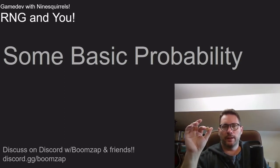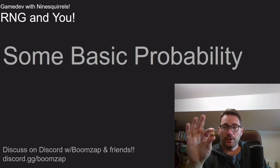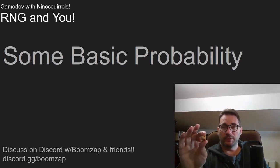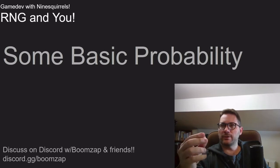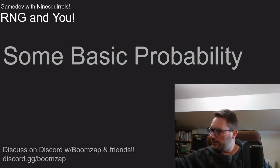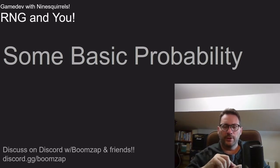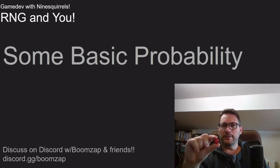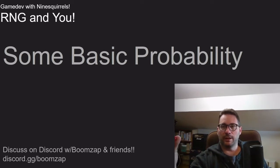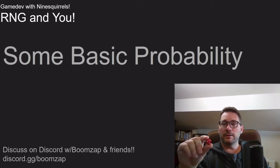It doesn't have to be equal flat probability. For instance, using a 10-sided die, I could say on a roll of one to six you die and from seven to ten you live. That gives a 60% chance of dying and a 40% chance of living. Just because it's flat doesn't mean it's equal. And using two 10-sided dice, I can quickly make a one-to-a-hundred range that maps precisely to percentages — if I roll under 80, that's an 80% chance of something happening.